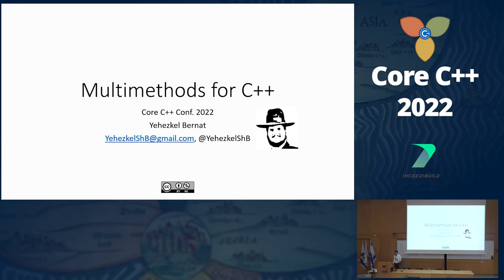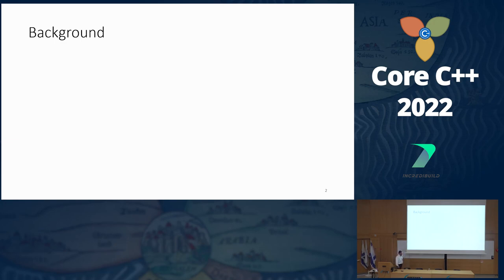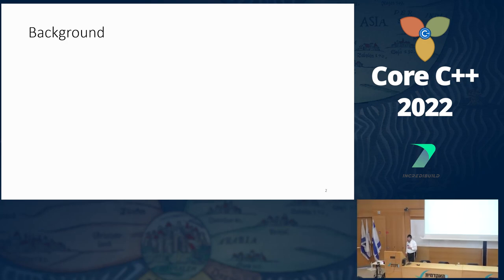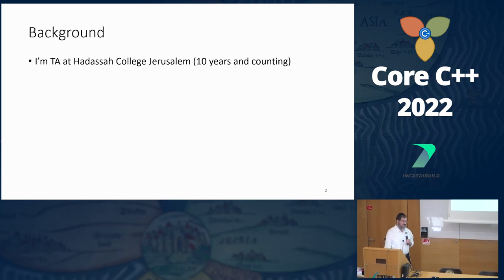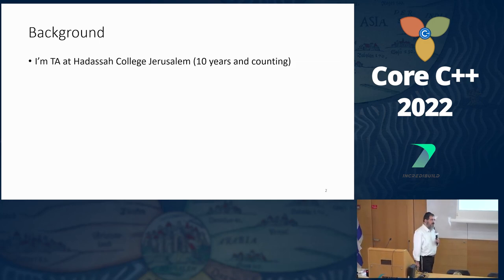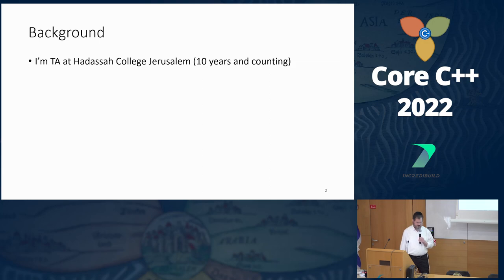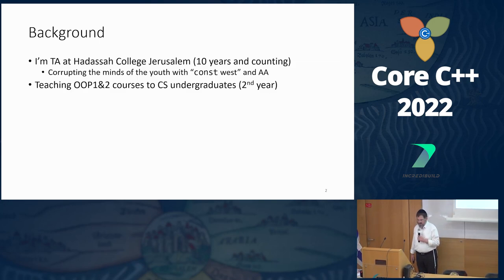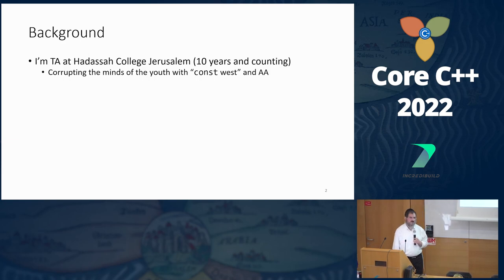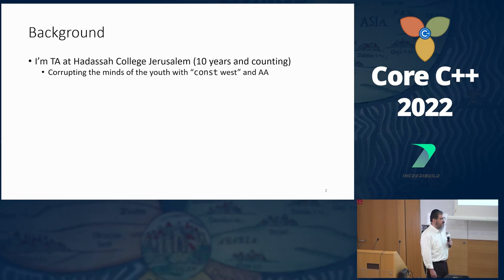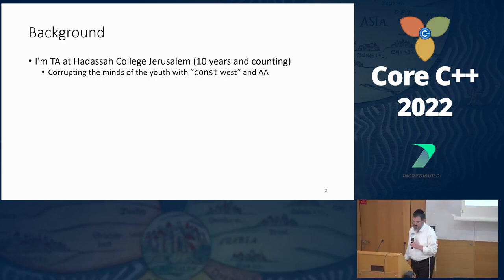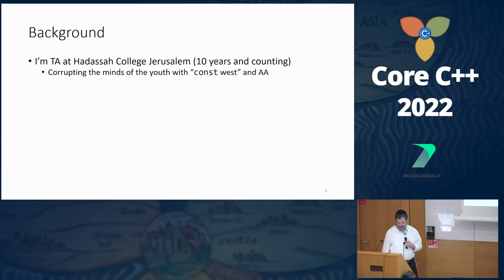If you know me from any social network, you might recognize my profile picture here. A bit more background: I'm also teaching at Hadassah College, Jerusalem, two courses of object-oriented programming. It includes generic programming, also known as templates, design patterns, and other things — and corrupting the minds of youth with things like const-west and always-auto. Since C++17, we can remove the 'almost' from this idiom.